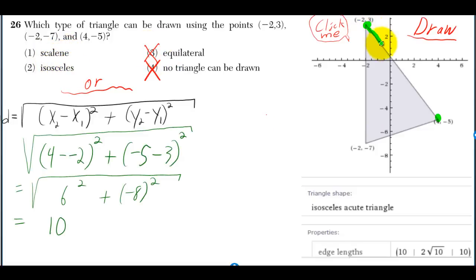We can use the distance formula to figure out if this side is equal to this side. The distance formula is the square root of the change in x squared plus the change in y squared.